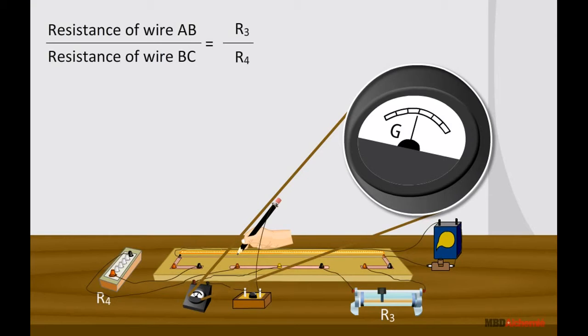Since the bridge is balanced, the ratio of resistance of wire AB to the resistance of wire BC is equal to the ratio of R3 to R4. If RCM is the resistance per unit centimeter of the wire, then the relationship can be expressed mathematically.